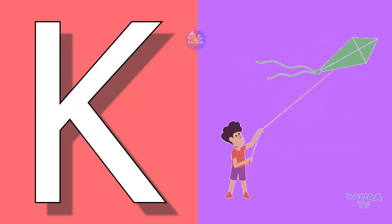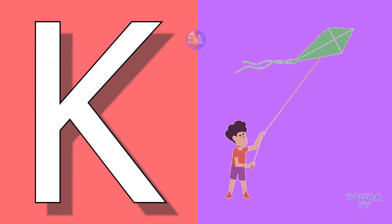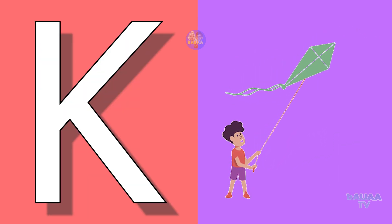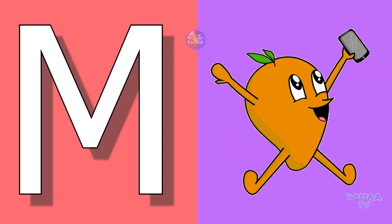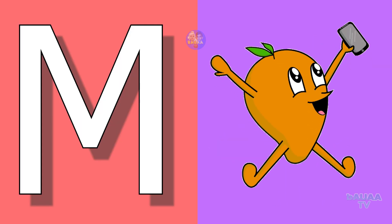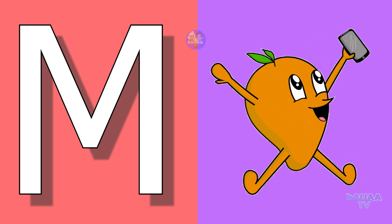K for kite, kite means patang. L for lion, lion means sher. M for mango, mango means aam.